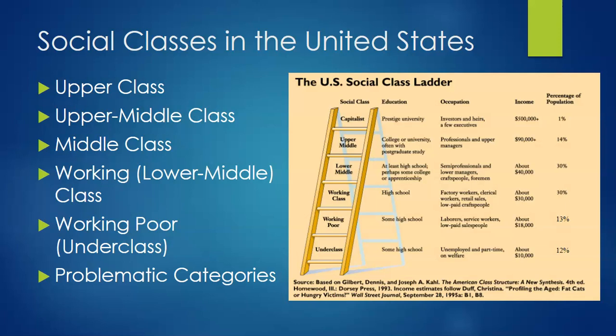While we seem to be able to recognize class distinctions implicitly, there are no systematic ways of delineating each category. Still, sociologists have made an effort to understand and define class, and next time we'll turn to the theories that result from those efforts.